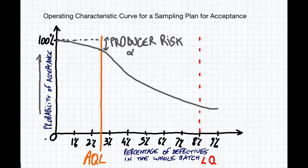This is the alpha risk. And this is always a risk — again, it's a random inspection. We're trying to find the best trade-off, but it comes at a cost: there's a risk of rejecting something at the expense of the producer, even though it's actually good.